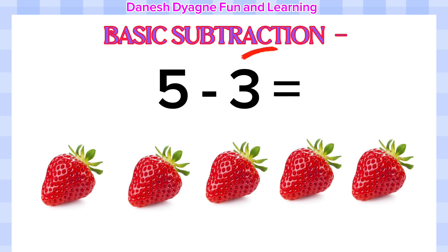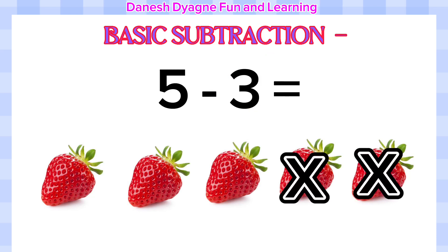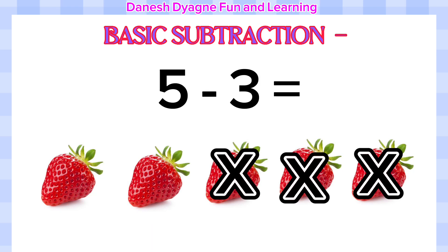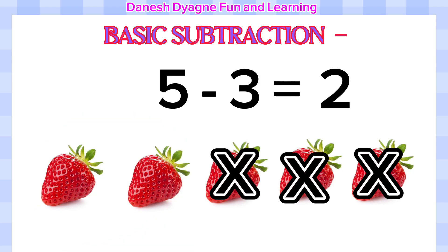Let's remove three objects by putting an X: one, two, three. How many strawberries are left? One, two. Two strawberries left. So five minus three equals two.